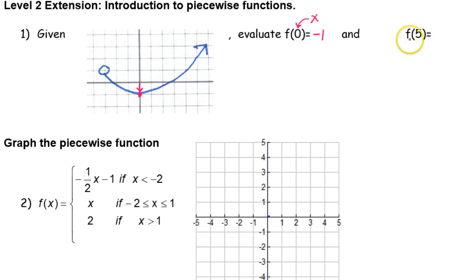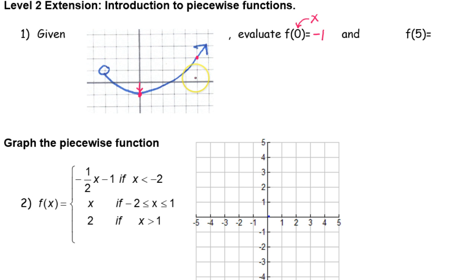Similarly, what's the value of the function at five — what is f of five? Let's go over to an x value of five: one, two, three, four, five. Here's x equals five, and the function is up here, so at an x value of five, the y value — the value of the function — is two.